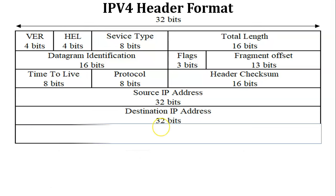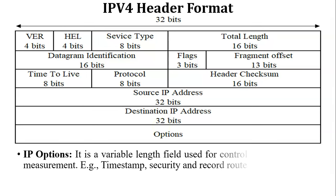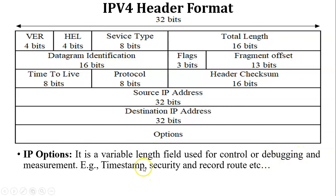The last field is Options. Options is a variable-length field, and its purpose is the control and debugging of the IPv4 datagram. In the Options field we can add information such as timestamp, security, and the route of the IPv4 datagram. Thank you for watching this video.